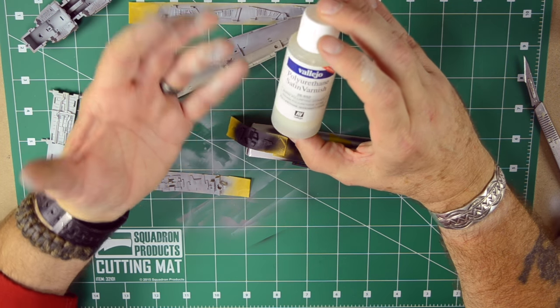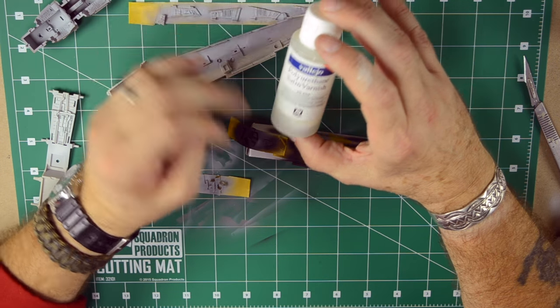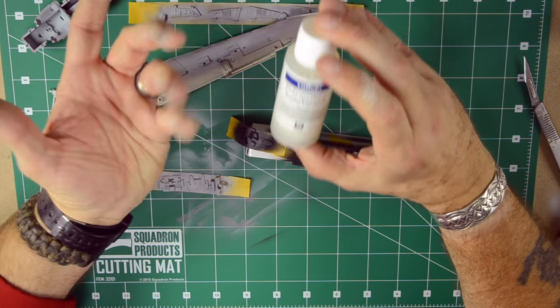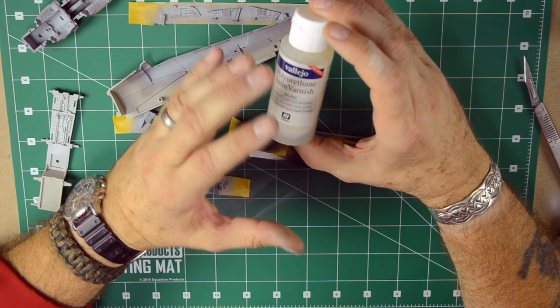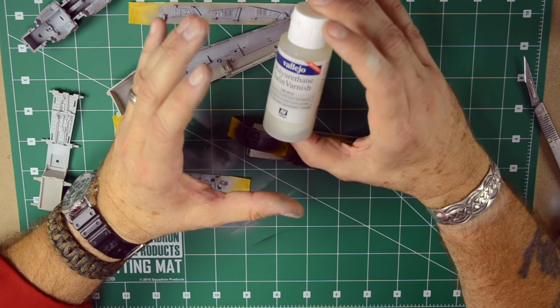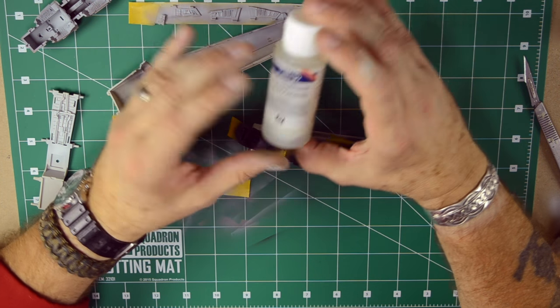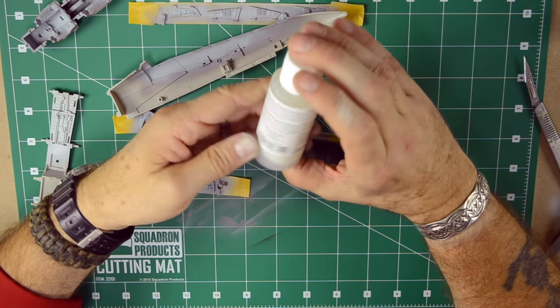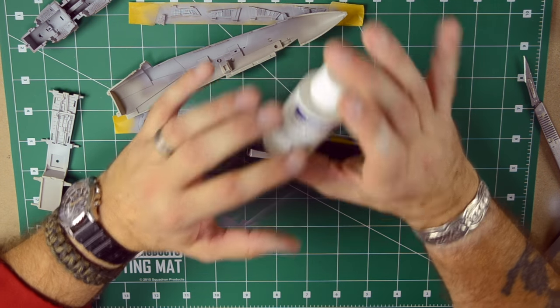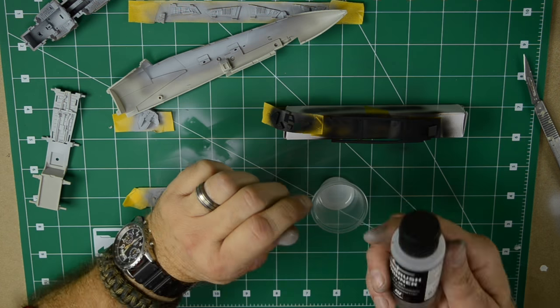I use it on airplanes. I use it on tanks. I use it basically on anything. Make sure everything is shaken. It's a little milky. The old varnish was more transparent. This is a little bit more milky. But it will all dry up clear and without any problems. This is the best out there in general. Of all the varnishes in the world. This one is the better one.